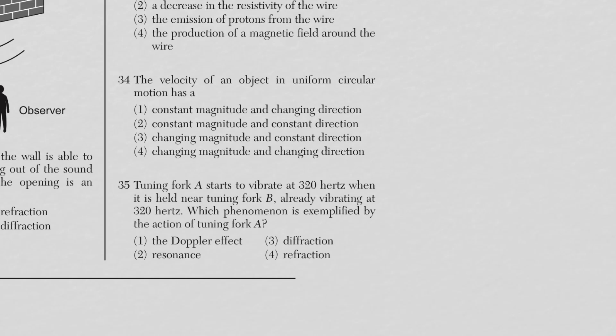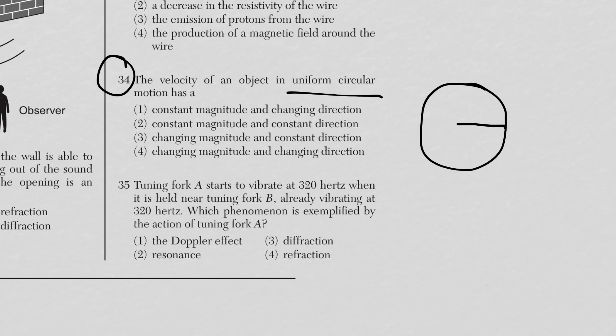Question 34 asks about velocity of an object in uniform circular motion. The magnitude of velocity is constant, but the direction is always changing — that's choice one.